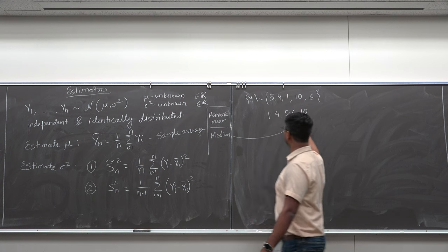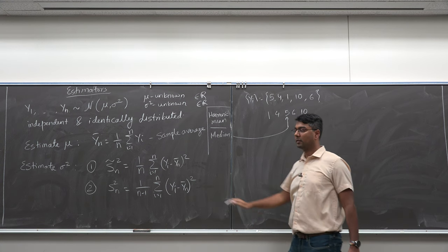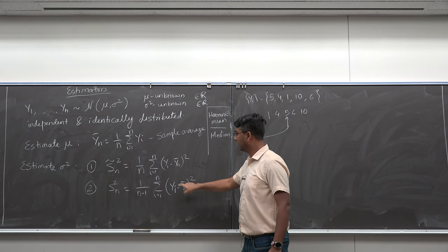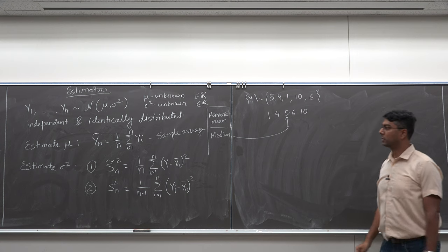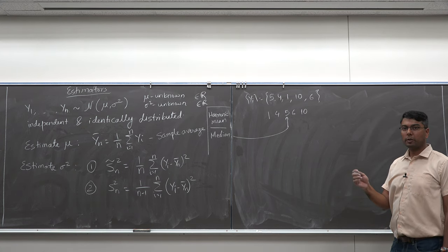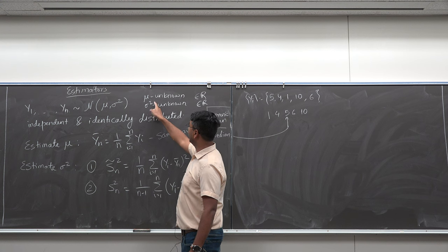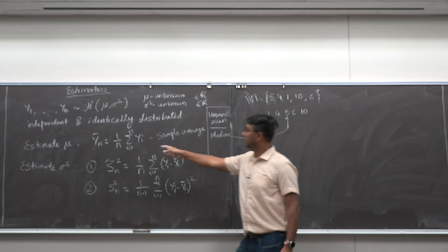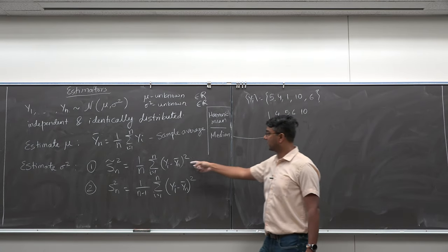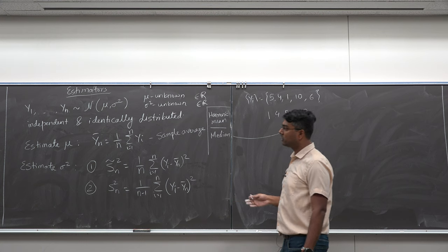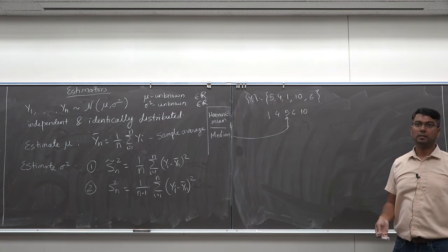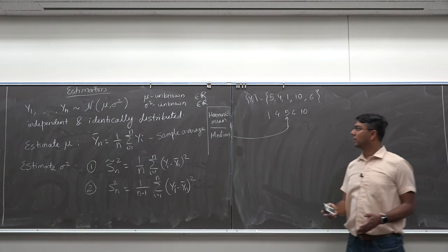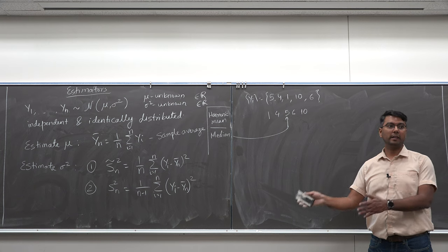So I have two estimators for mean and two estimators for covariance. I can also replace the sample mean with the median in the variance formula to get another estimate of sigma squared. For the same unknown quantities, I have multiple estimators. Now we need to figure out what is a good estimator and what is a bad estimator — depending on the situation, one may make more sense than another.